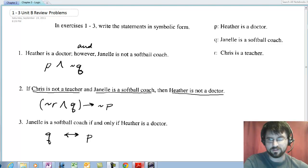The next one says if Chris is not a teacher and Janelle is a softball coach, comma. The comma indicates to us that both of these together, this conjunction, is the antecedent of the conditional. So those go in parentheses. Chris is not means we have not R and Q. Heather is not a doctor is not P. So if this, then not P.